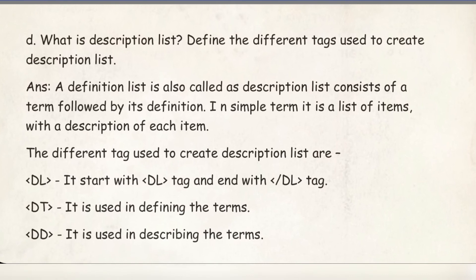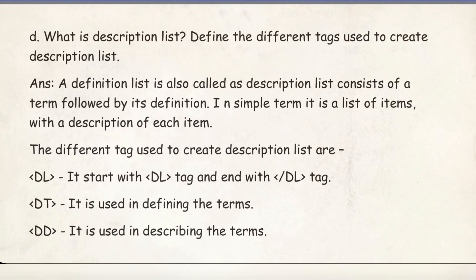Number D: What is a description list? Define the different tags used to create a description list. A definition list is also called a description list. It consists of a term followed by its definition — in simple terms, it is a list of items with a description of each item. The different tags are: DL (used to start the definition list), DT (used for the term), and DD (used to describe or define the term).